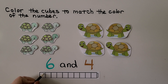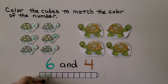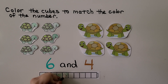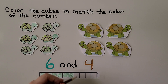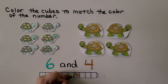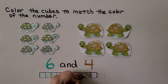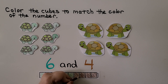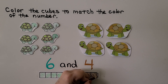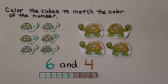It's green. We can color six cubes green — one, two, three, four, five, six. And the four is brown. We can color four cubes brown — one, two, three, four. Six and four is a number pair that makes 10, and our cube train shows six green and four brown.